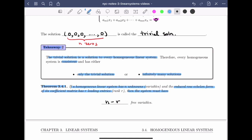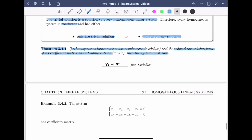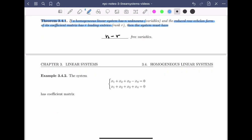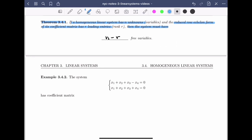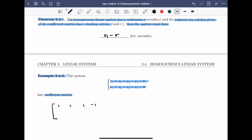Let's see how we can apply theorem 3.4.1 to an actual homogeneous system. Example 3.4.2: The system x1 plus x2 plus x3 minus x4 equals 0, and x1 plus x2 plus x3 plus x4 equals 0 has coefficient matrix—so here I'm just going to write down the coefficient matrix, which is [1, 1, 1, -1; 1, 1, 1, 1].